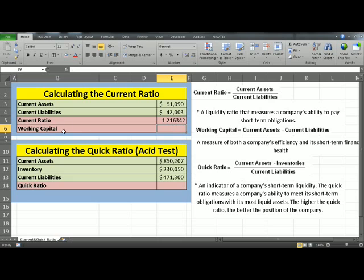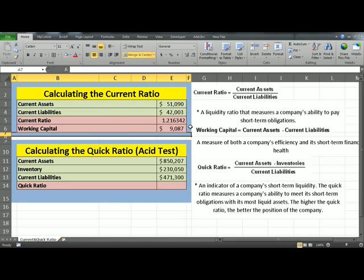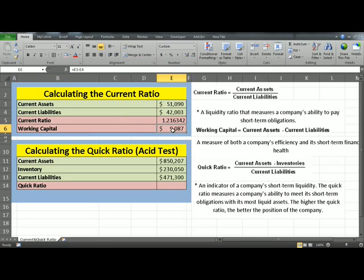To calculate Working Capital, you click in E6, equals Current Assets, minus Current Liabilities. And this basically gives you a figure, a number, which is the amount of cash the company has on hand to pay its liabilities.